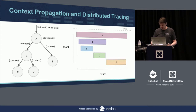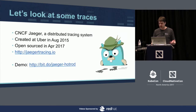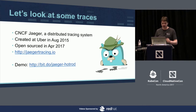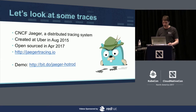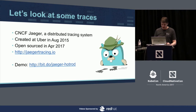Jaeger is a distributed tracing system we started at Uber and open sourced a few months ago. It became an official CNCF project in September. Now I'll show you a demo of the tracing.